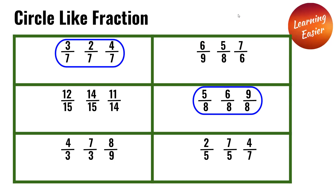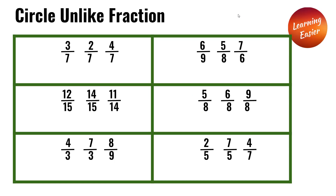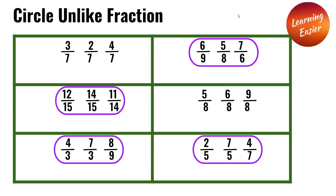3 over 7, 2 over 7, and 4 over 7, and 5 over 8, 6 over 8, and 9 over 8 are not unlike fractions — they are like fractions. The unlike fractions are: 6 over 9, 5 over 8, and 7 over 6; 12 over 15, 14 over 15, and 11 over 14; 4 over 3, 7 over 3, and 8 over 9; and 2 over 5, 7 over 5, and 4 over 7.